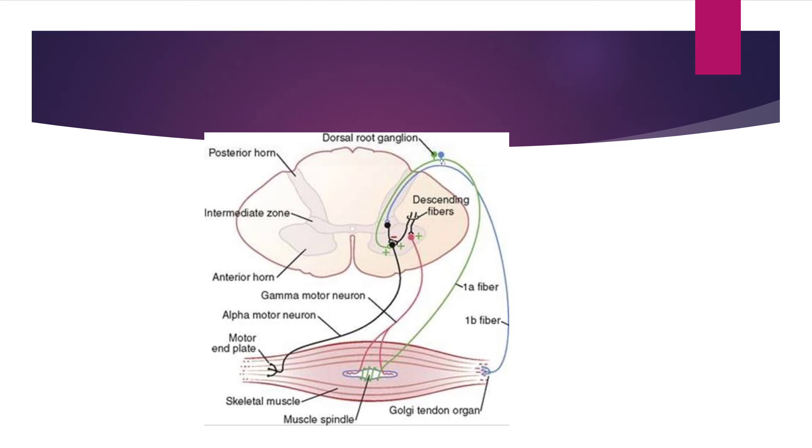And alpha motor neuron will stimulate the extrafusal fibers. So basically extrafusal fibers will also remain in a somewhat steady state of contraction because of this alpha motor firing.